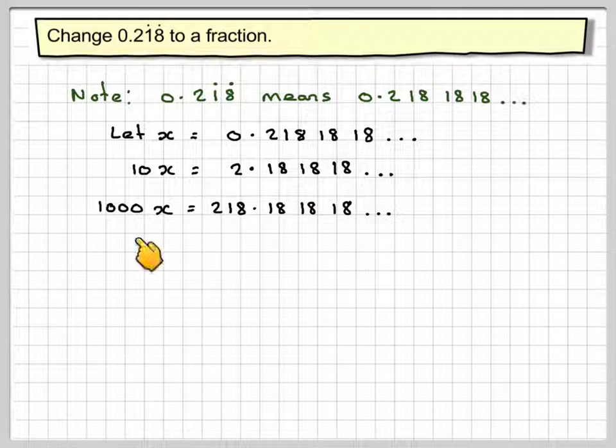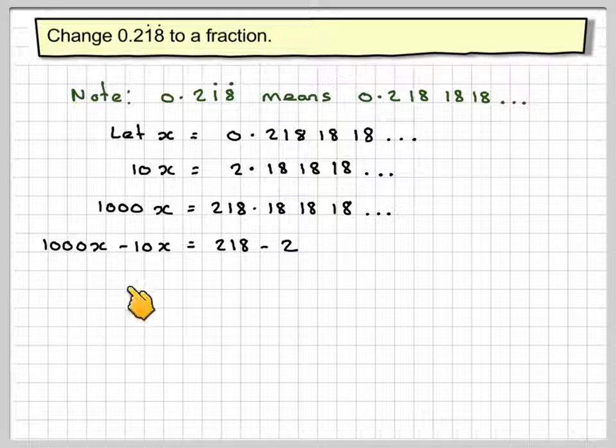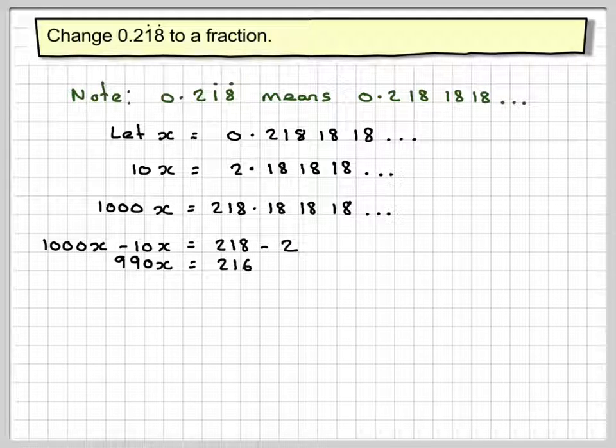Now you do 1000x minus 10x, which gives you 218 minus 2. 1000x minus 10x equals 990x. 218 minus 2 equals 216.